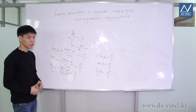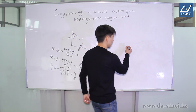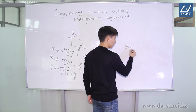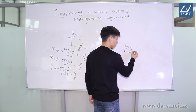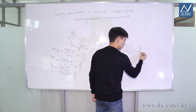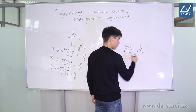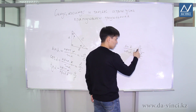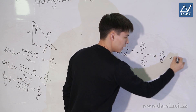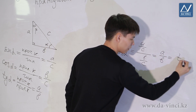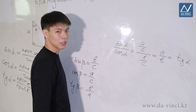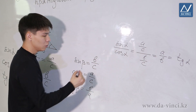Let's derive some relations between sine, cosine and tangent. What happens if we divide the sine of alpha by the cosine of alpha? The sine of alpha is the ratio A to C, and cosine alpha is the ratio B to C. We reduce C and we get A divided by B — but that is the tangent of alpha. Thus, the tangent of alpha is equal to the sine of alpha divided by the cosine of alpha.